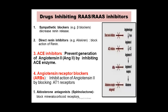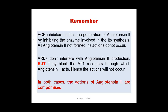Now we look at drugs that inhibit the RAS pathway. We are mainly concentrating on two classes: ACE inhibitors, which inhibit the ACE enzyme, preventing the conversion of angiotensin 1 to angiotensin 2, so angiotensin 2 will not be produced; and angiotensin receptor blockers, which block the AT1 receptors through which angiotensin 2 acts.